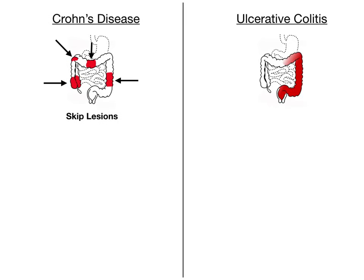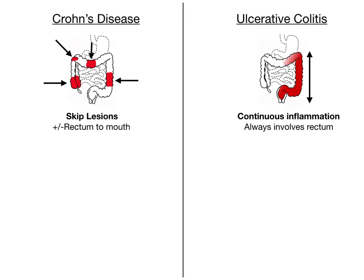In ulcerative colitis, it always has rectal involvement and is always continuous inflammation, extending from the rectum up until about the transverse colon. It does not skip around. In Crohn's disease, although it can be anywhere from the rectum to the mouth, it has a propensity for the terminal ileum — it typically starts or has a focus there. Those are the differences in terms of where the inflammation is located, and it's probably the highest yield point in this whole video.